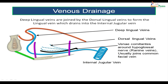For venous drainage: the deep lingual veins are joined by the dorsal lingual veins to form the lingual vein, which drains into the internal jugular vein. Additionally, there is a large network of veins around the hypoglossal nerve called the venae comitantes of the hypoglossal nerve. These form an anastomotic channel and usually join the common facial vein, but sometimes can join the lingual vein. The venae comitantes are also called ranine veins.